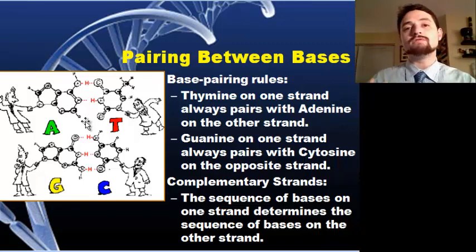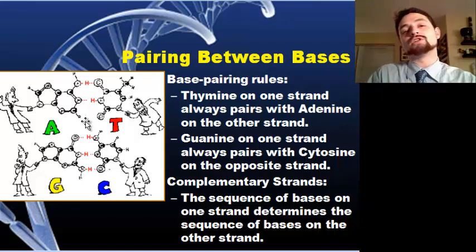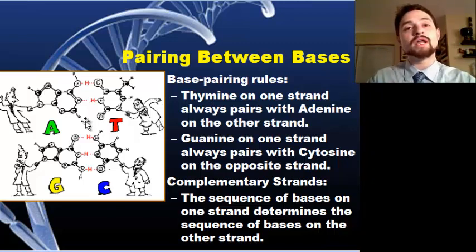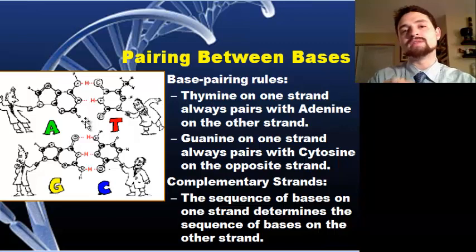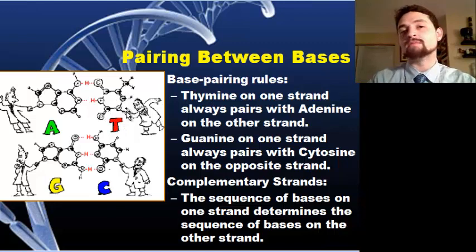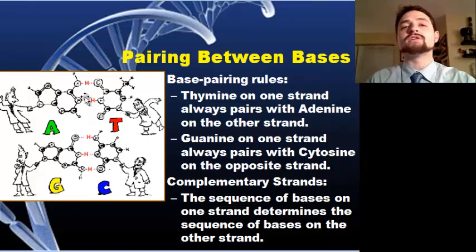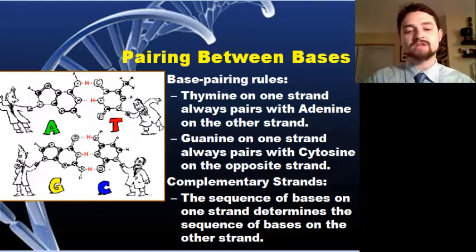We use these same principles when we replicate DNA, when we make RNA, and when we make proteins from that RNA. The base pairing rules are always the same: adenine always bonds with thymine, guanine always bonds with cytosine. The only difference when we talk about RNA is that RNA does not have thymine — it has uracil — but that is the only difference in how the bases line up.